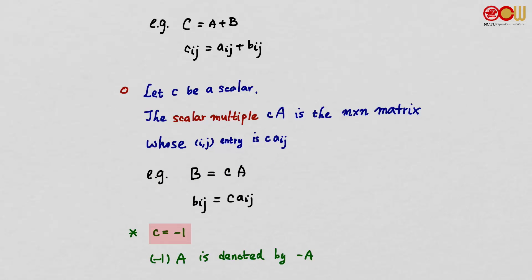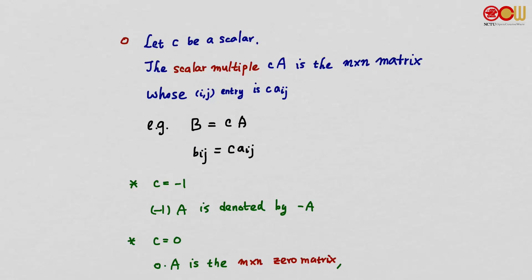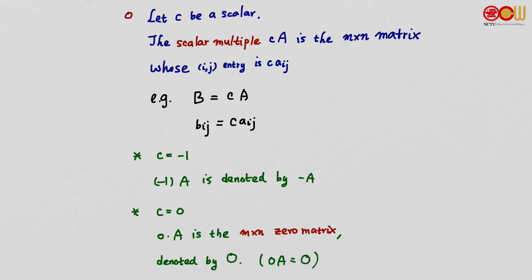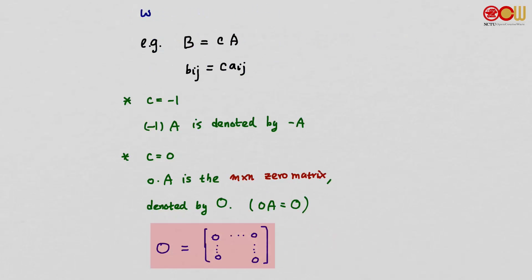For the special case that c is minus 1, then the scalar multiple −1·A will simply be denoted as −A. And for the special case that c is equal to 0, the scalar multiple 0·A will be a matrix of all zeros — the m by n zero matrix. We call this the zero matrix and use the notation big O, so 0·A = O.